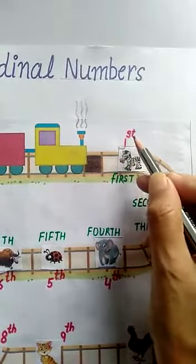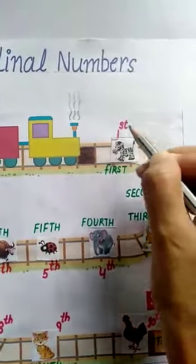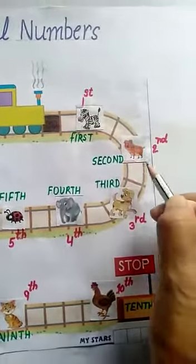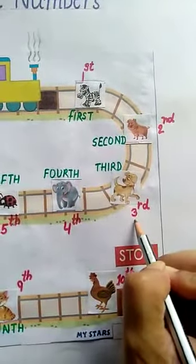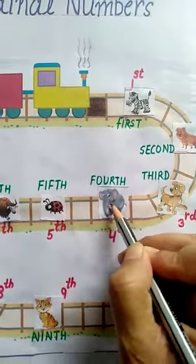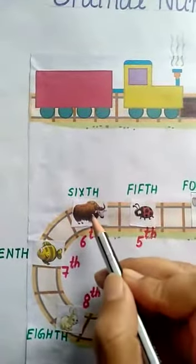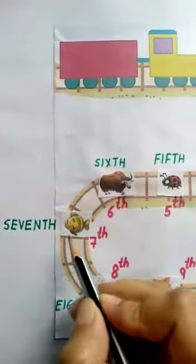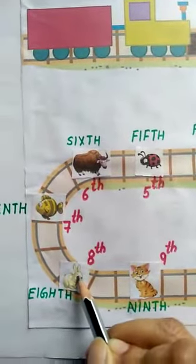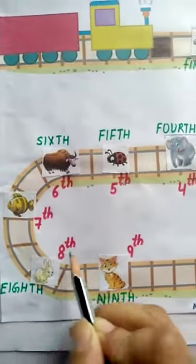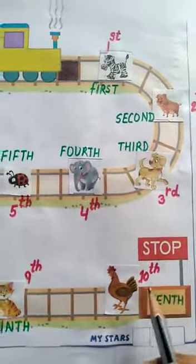Zebra is in first position. First, F-I-R-S-T, first. First and abbreviation is S-T. Now, pig is in second position. Pup is in third position. The elephant is in fourth position. Bug is in fifth position. Yak is in sixth position. Fish is in seventh position. The rabbit is in eighth position. Cat is in ninth position. And hen is in tenth position.